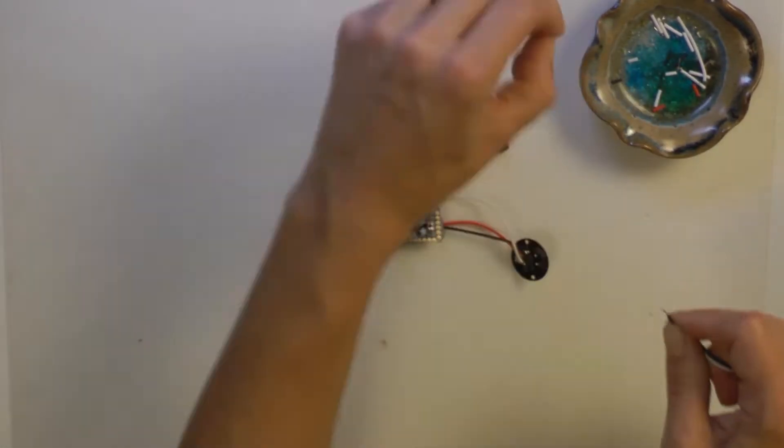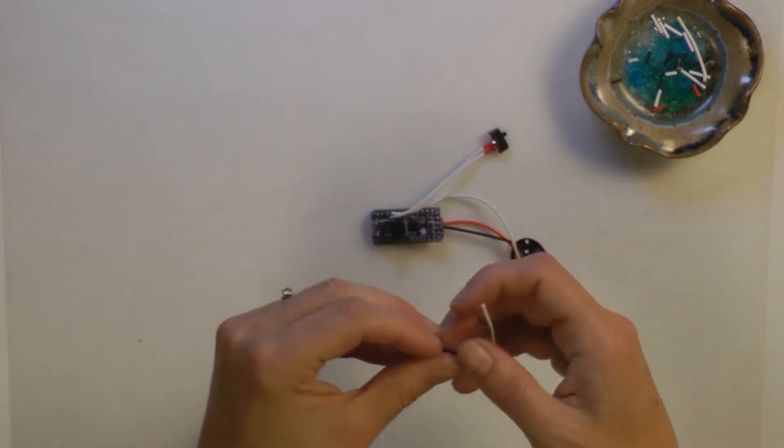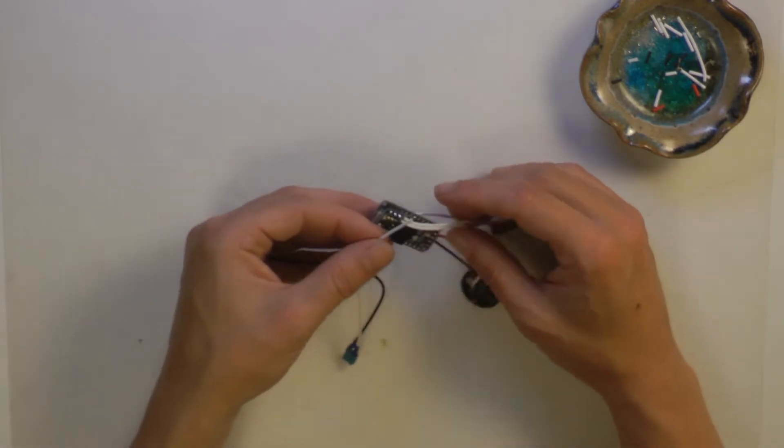Add your mode changing button by soldering the white wire to pin 3 and the ground wire to the remaining ground pin on the Pro Trinket.